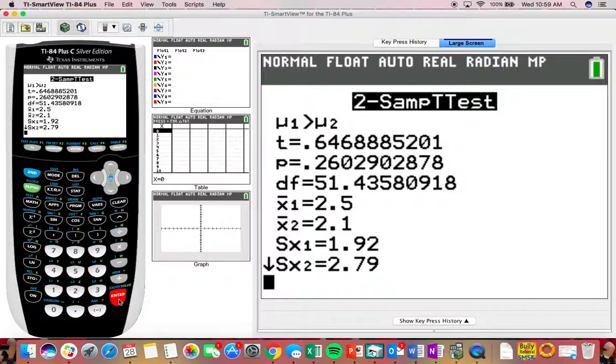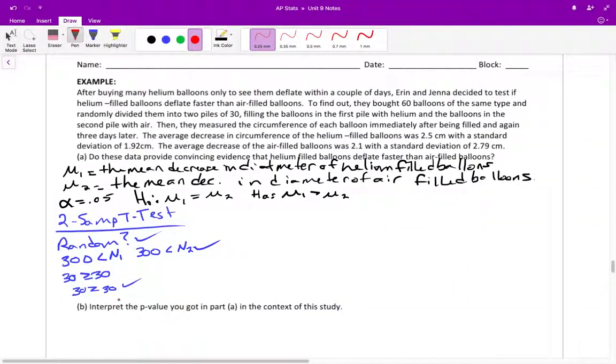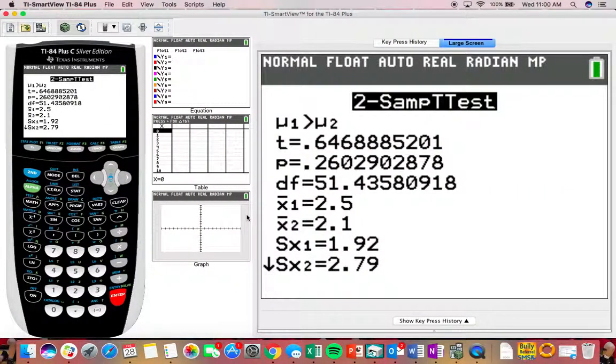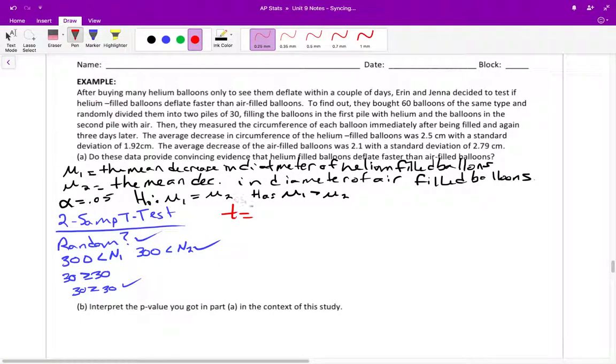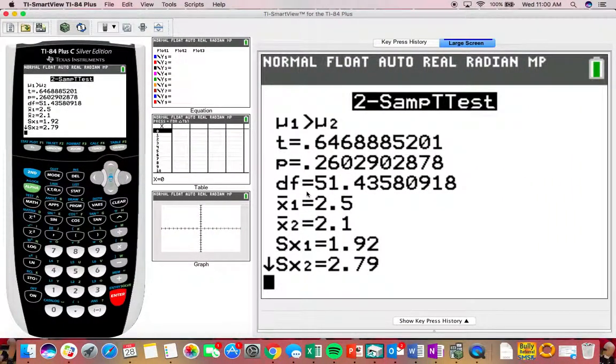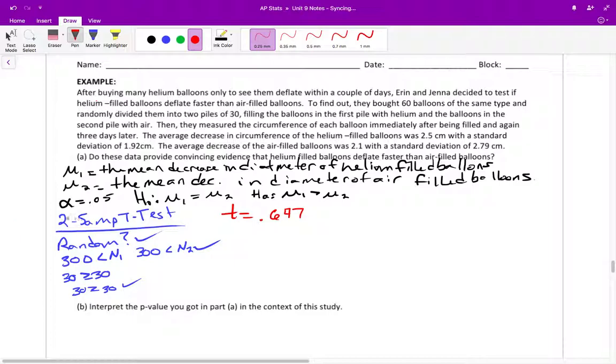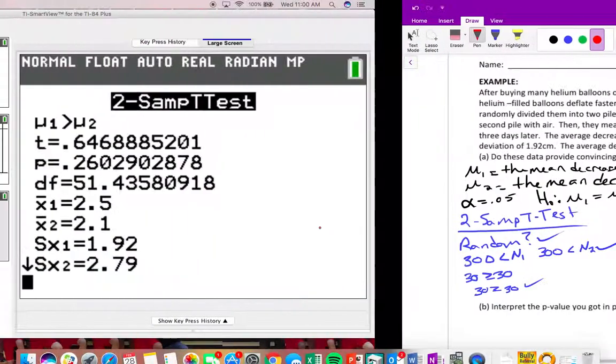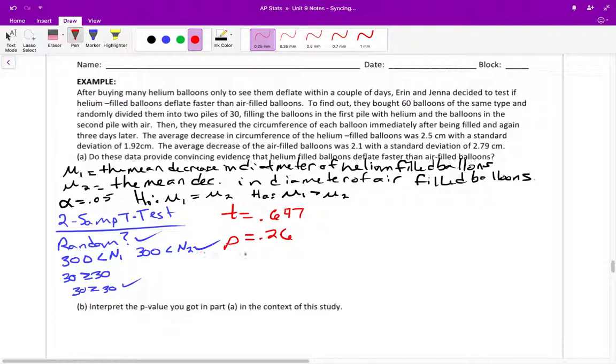So, writing these up as our conclusion. Well, first, let's write these up for our do-step. So for our do-step, at this point, we said our t-value. I'm going to have to keep switching back and forth. T-value was 0.647. Let's see. P-value was 0.26. And let's see. Degrees of freedom, 51.4.